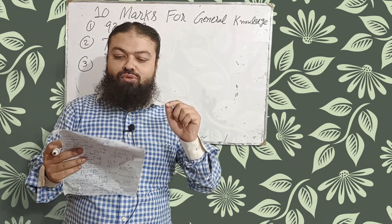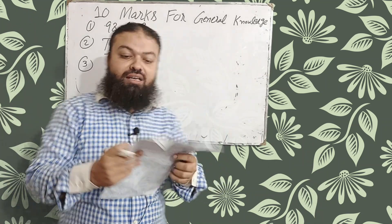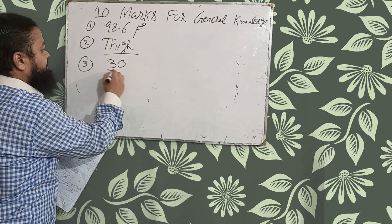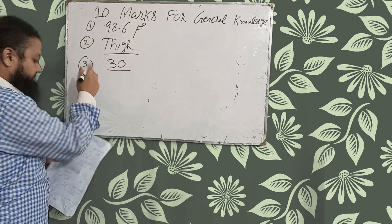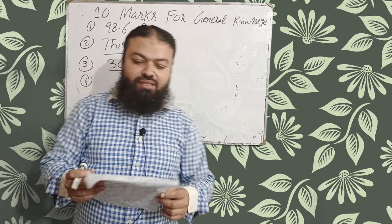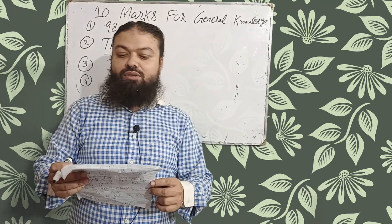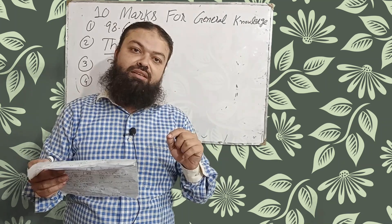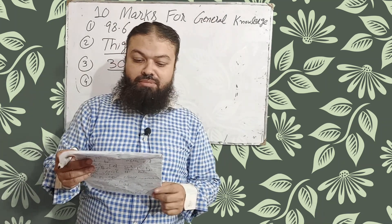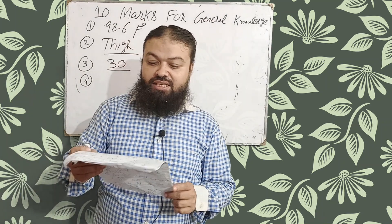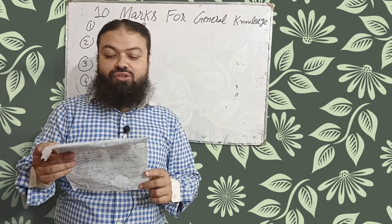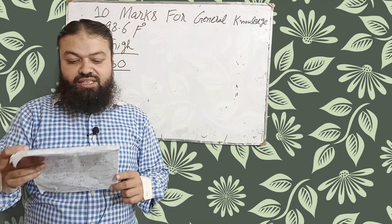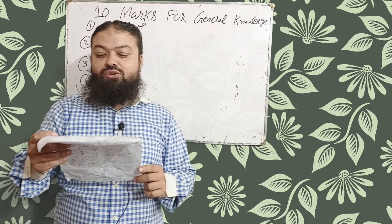Number three: the total number of bones in the human skull are 30. Number four: the green color of plants is due to the presence of chlorophyll — a very important one. Number five: the processed data is called information.